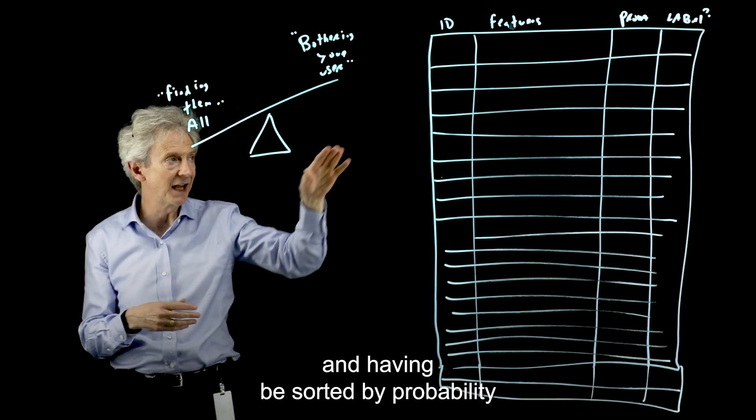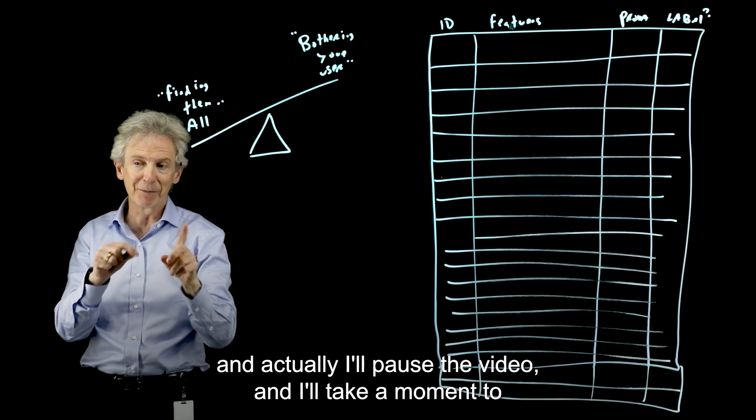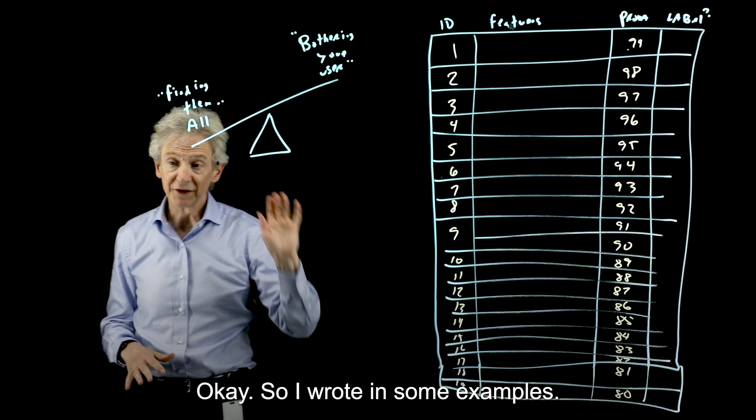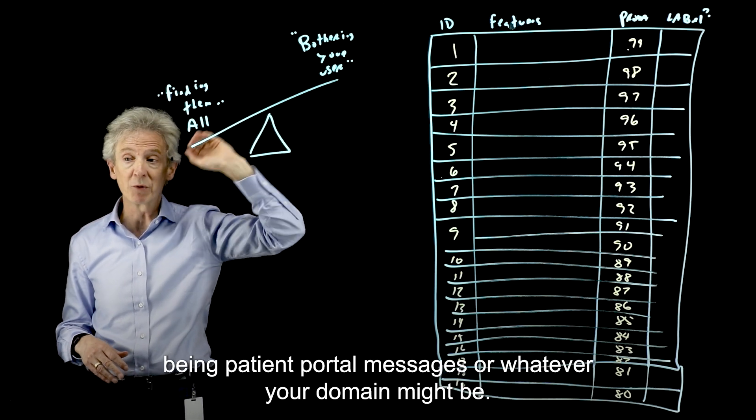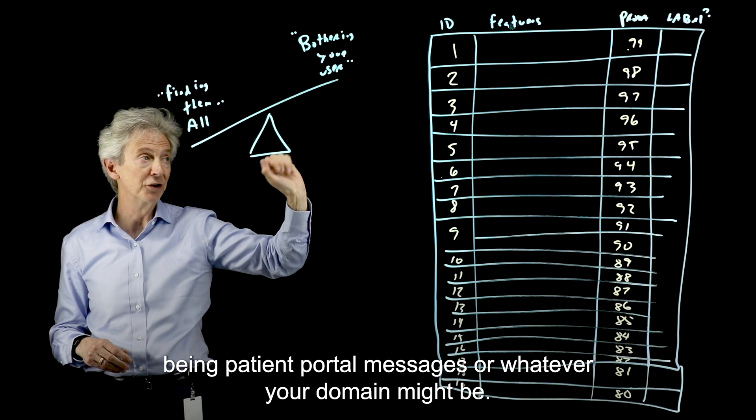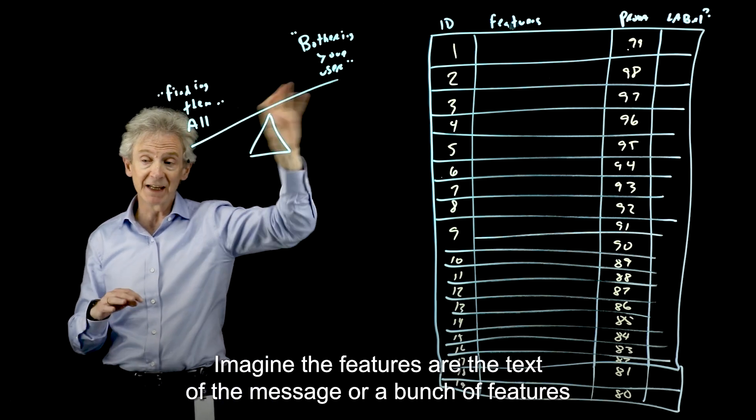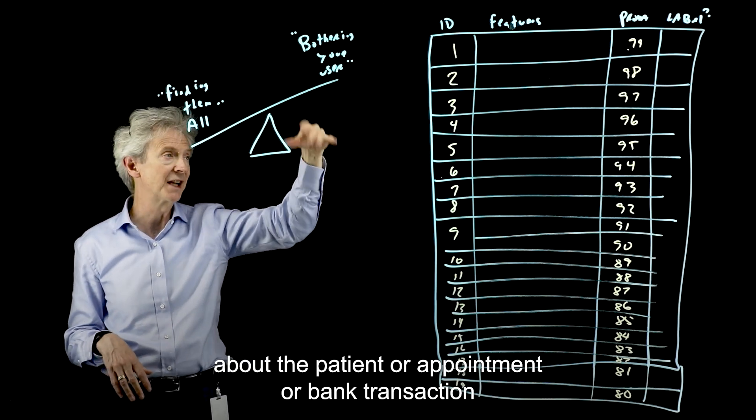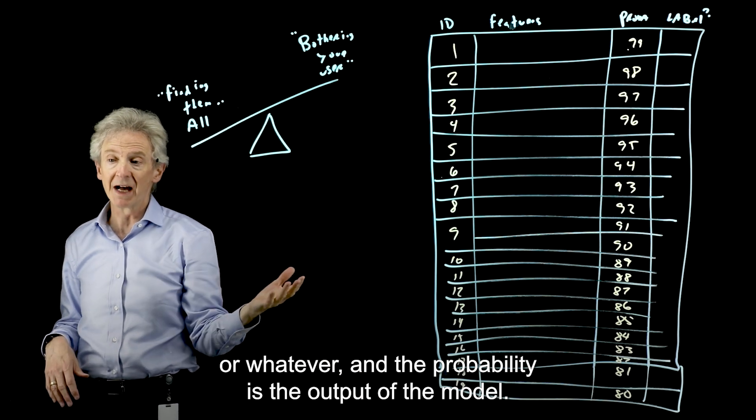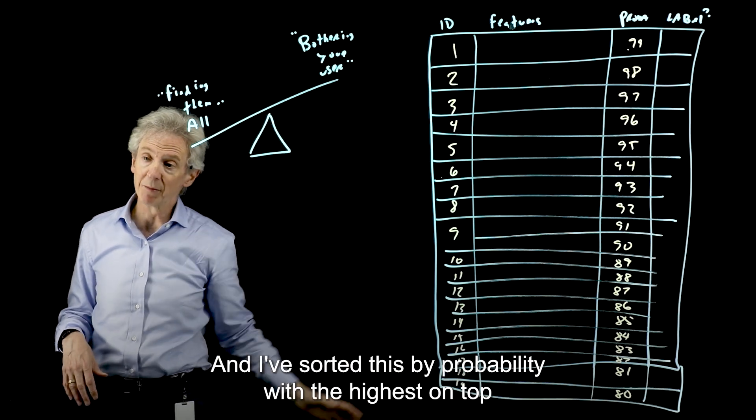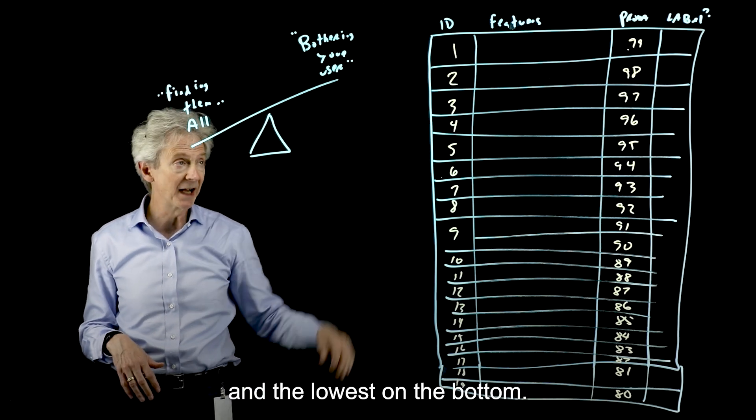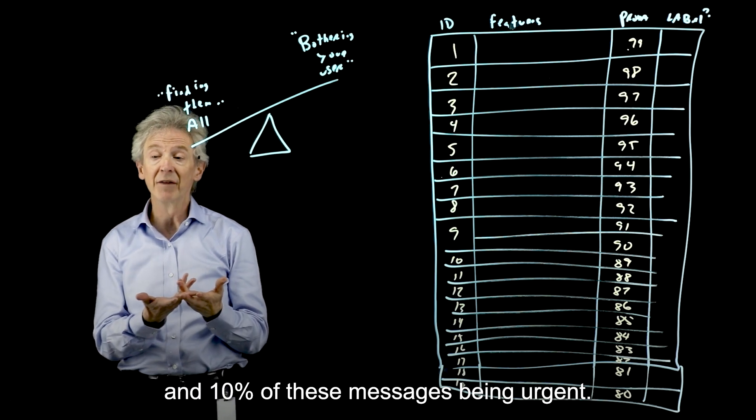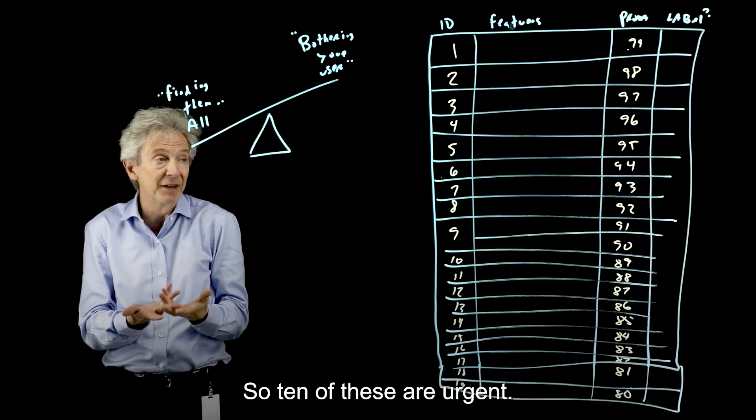So if you imagine that table over here being 100 long and sorted by probability - I'll pause the video, I'll take a moment to write in some examples here. Okay, so I wrote in some examples. Imagine each of these being patient portal messages or whatever your domain might be. Imagine the features are the text of the message or a bunch of features about the patient or appointment or bank transaction. And the probability is the output of the model, and I've sorted this by probability with the highest on top and the lowest on the bottom. And again, imagine this being 100 long and 10% of these messages being urgent. So 10 of these are urgent.